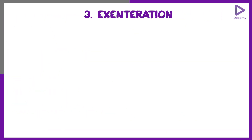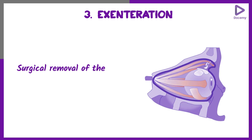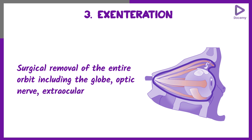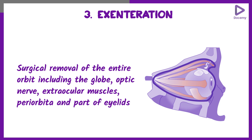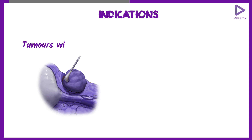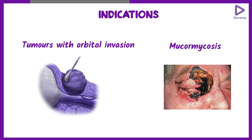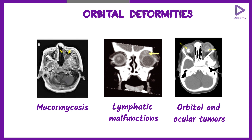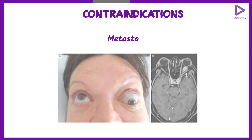Exenteration is the third modality, involving surgical removal of the entire orbit including the globe and optic nerve, extraocular muscles, periorbita, and even part of the eyelids. Indications include tumours with orbital invasion — and in recent times, mucormycosis is a very important indication — as well as orbital deformities. The contraindication is metastasis.